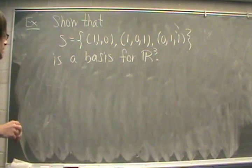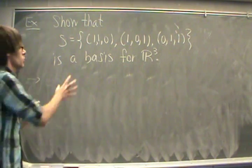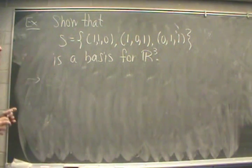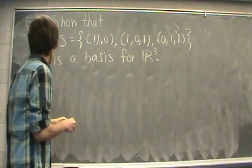Now in order to show that something is a basis, we must do two things. We have to check whether or not these three vectors are a linearly independent set of R^3, and we also have to check that these three vectors span this vector space R^3.